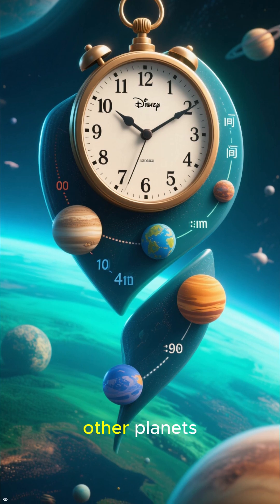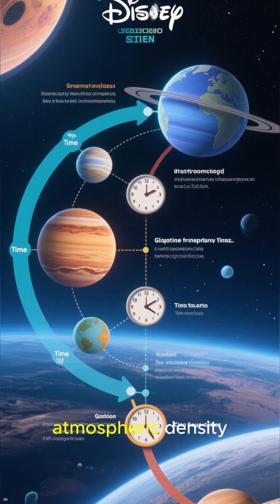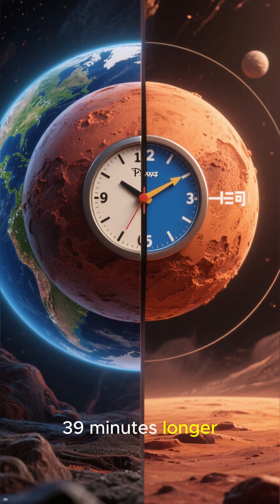Number 1. Time is not the same on other planets. Time on other planets is affected by factors such as gravity and atmospheric density. For example, a day on Mars is about 39 minutes longer than a day on Earth.